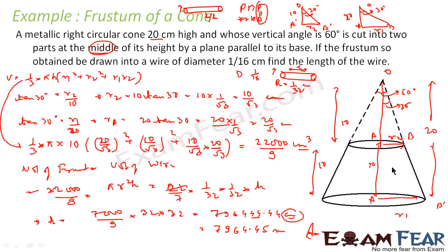To summarize: we found r1 and r2 using the given angle, then applied the frustum volume formula. Since the volume of the frustum equals the volume of the wire, we set them equal and solved to get the length of the wire as approximately 7,964.45 meters.